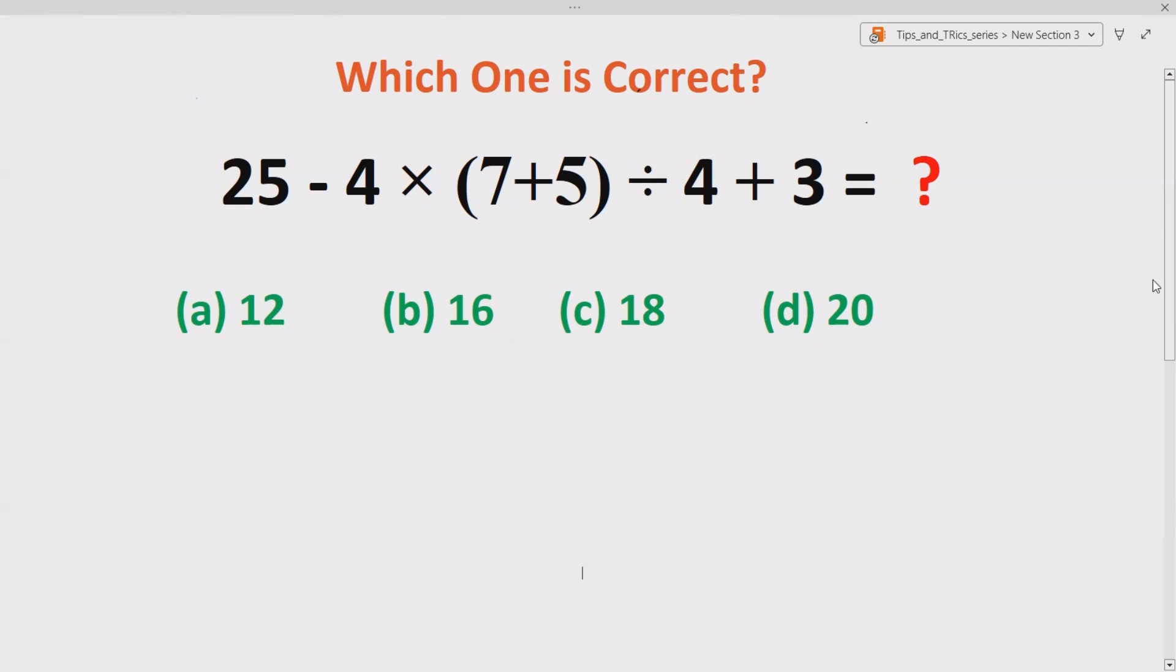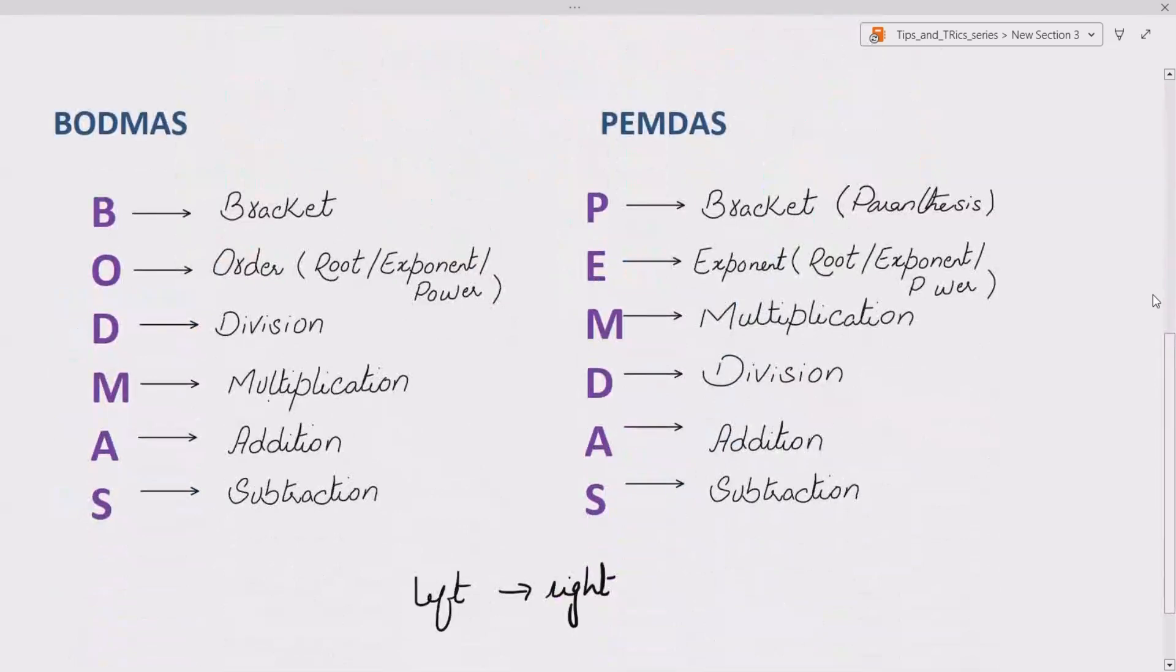Now let's first see what is the rule to solve any arithmetic expression in mathematics. To solve any arithmetic expression in mathematics, you have to follow BODMAS or PEMDAS. BODMAS or PEMDAS says if you are given any algebraic expression, you have to solve brackets if they are present in your expression.